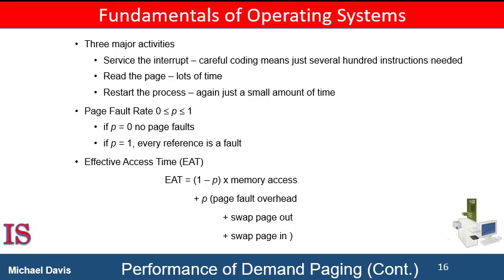The effective access time is directly proportional to the page fault rate. The computer can be slowed by a factor of 40 because of demand paging. If we want performance degradation to be less than 10%, we need to keep the page fault rate low — fewer than one memory access out of 399,990 should result in a page fault. It is important to keep the page fault rate low in a demand paging system; otherwise, effective access time increases, slowing process execution dramatically.